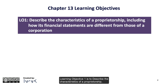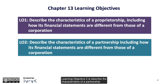Learning Objective 1 is to describe the characteristics of a proprietorship, including how its financial statements are different from those of a corporation. Learning Objective 2 is to describe the characteristics of a partnership, including how its financial statements are different from those of a corporation.